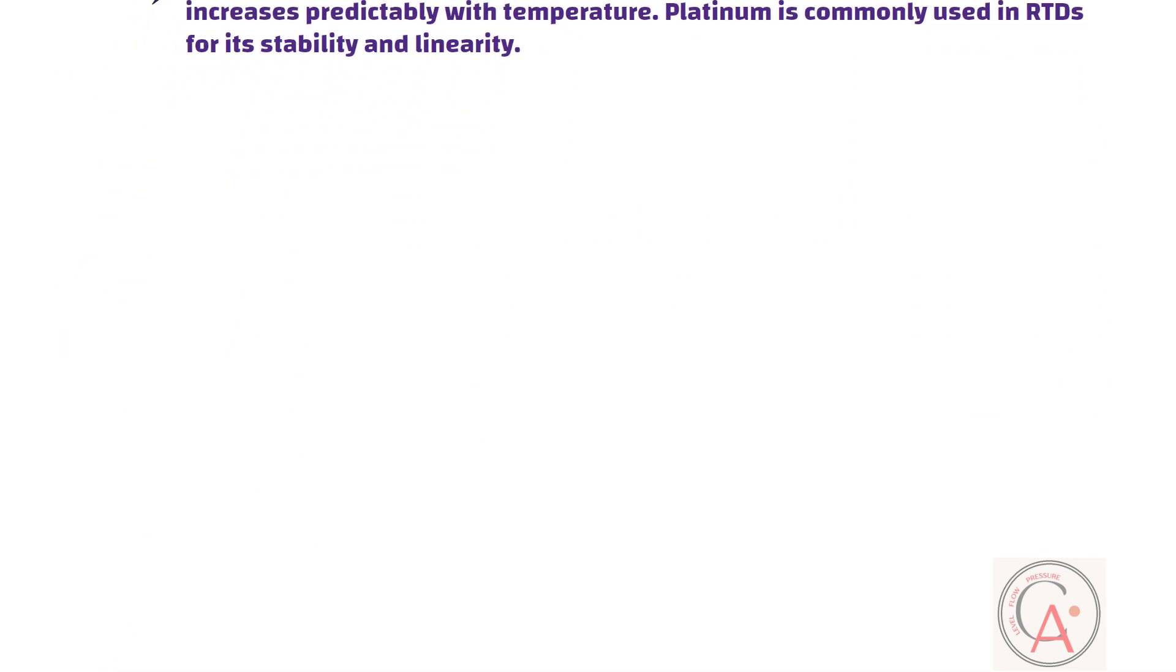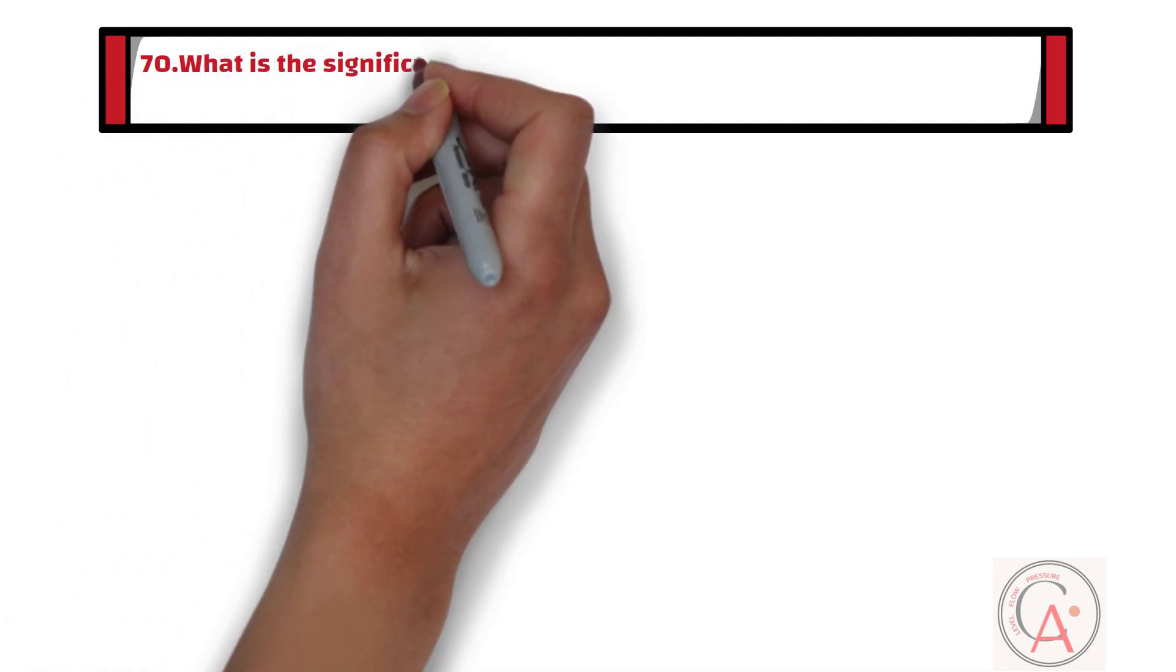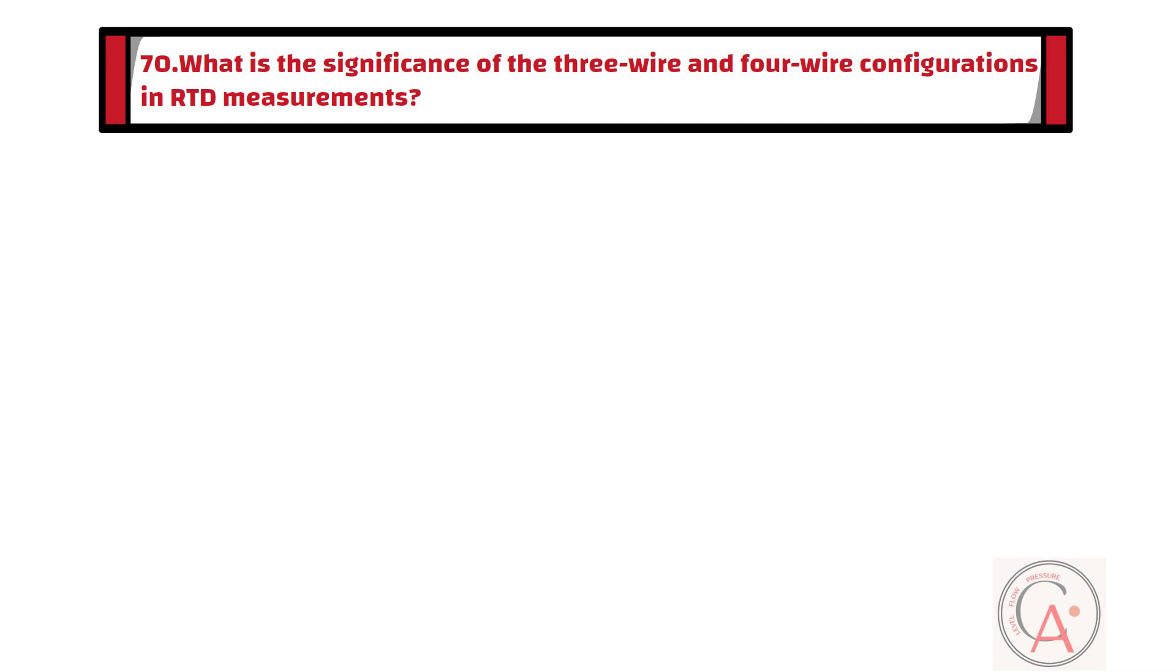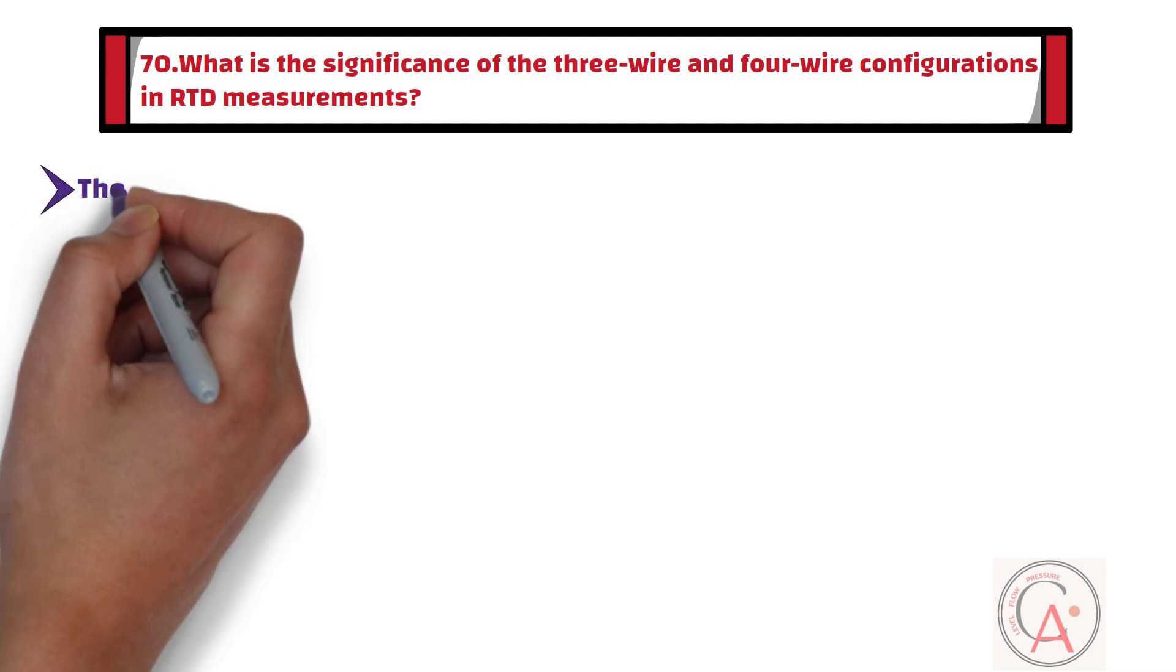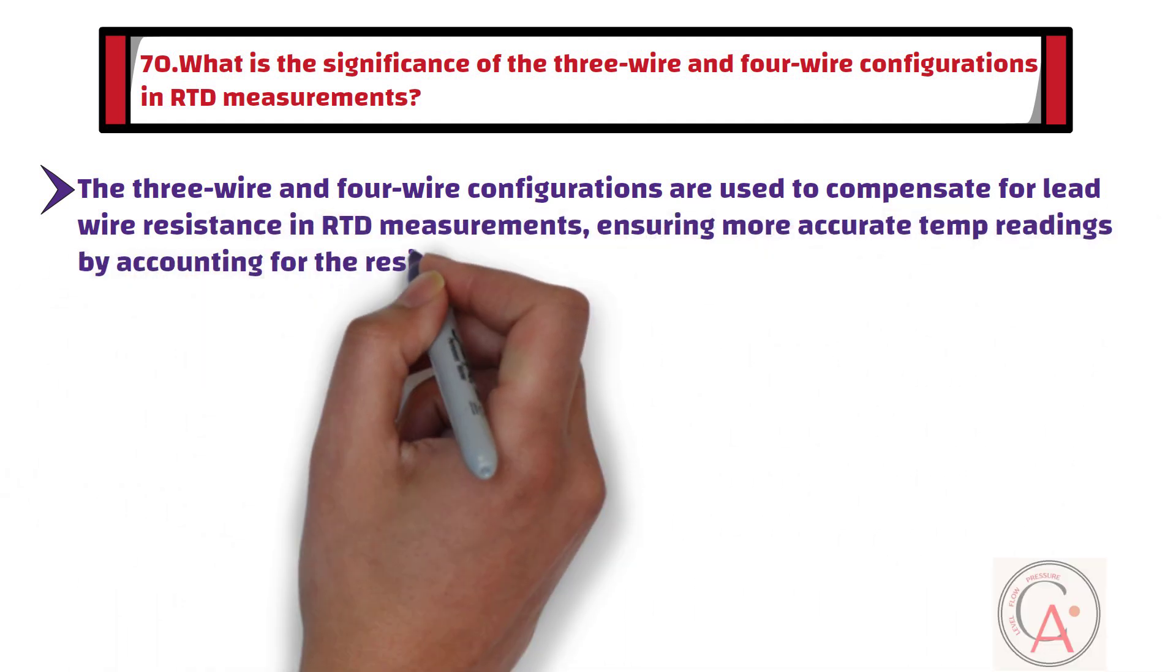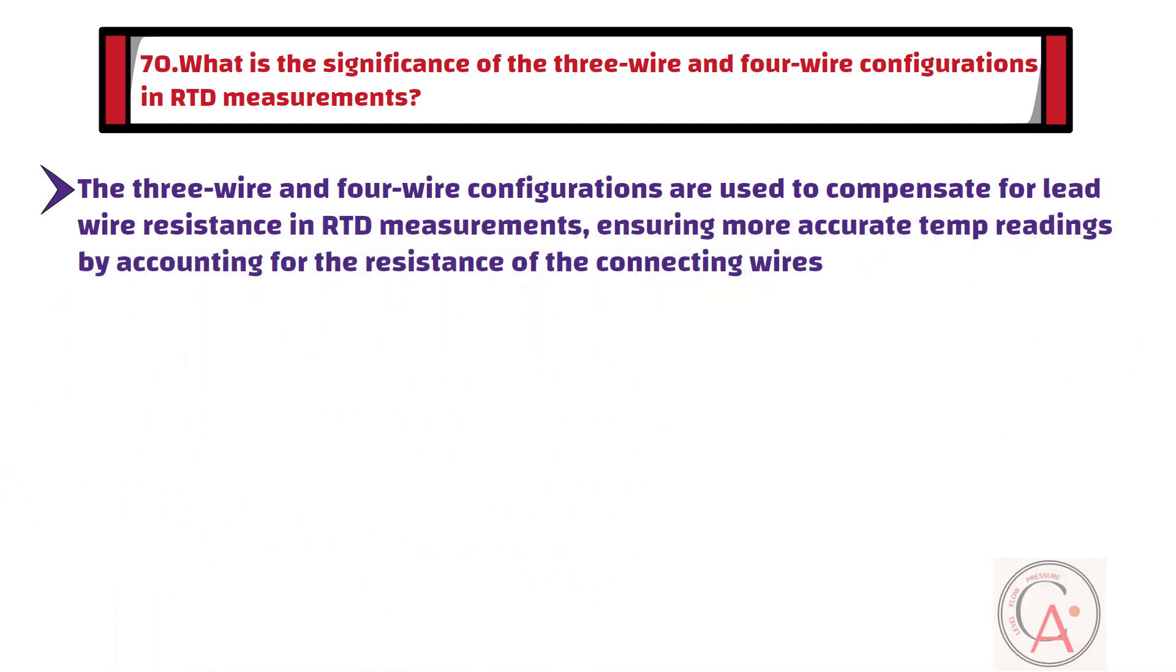Question number 70: What is the significance of the three-wire and four-wire configurations in RTD measurements? The three-wire and four-wire configurations are used to compensate for lead wire resistance in RTD measurements, ensuring more accurate temperature readings by accounting for the resistance of the connecting wires.